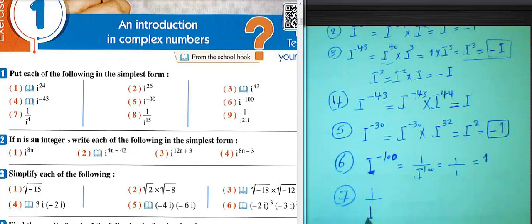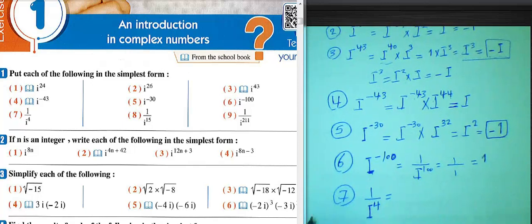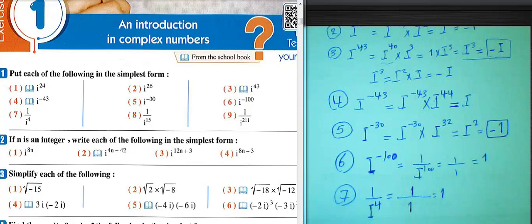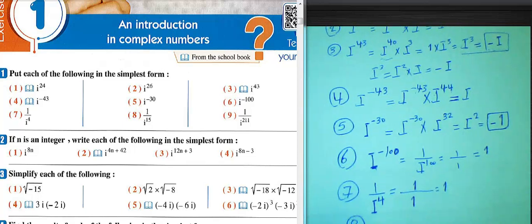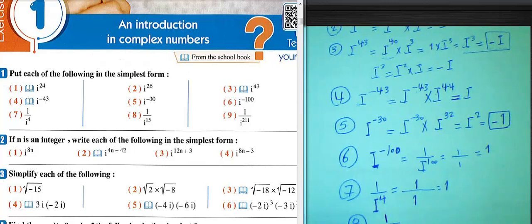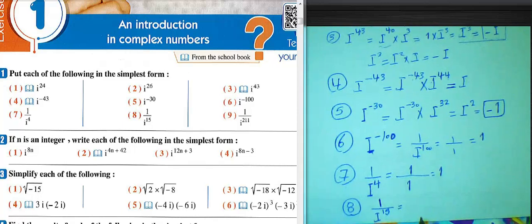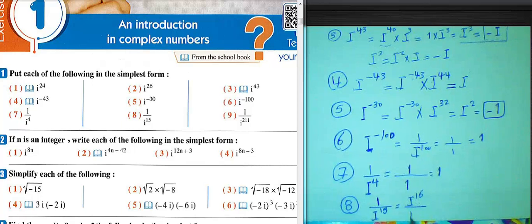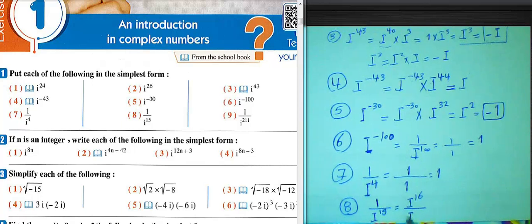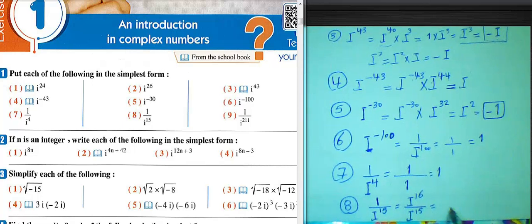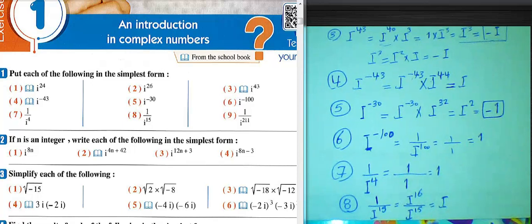Question 7: i over i^4. We can write i^4 equals 1, so 1 over 1 equals 1. Question 8: i^15 in the numerator — we can write i^16. i^16 equals 1, and 16 minus 15 equals 1. The result will be i.